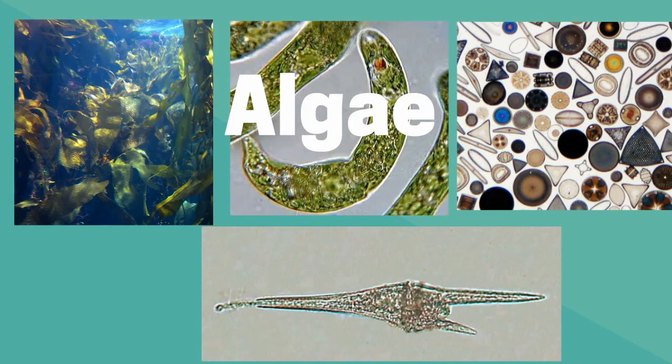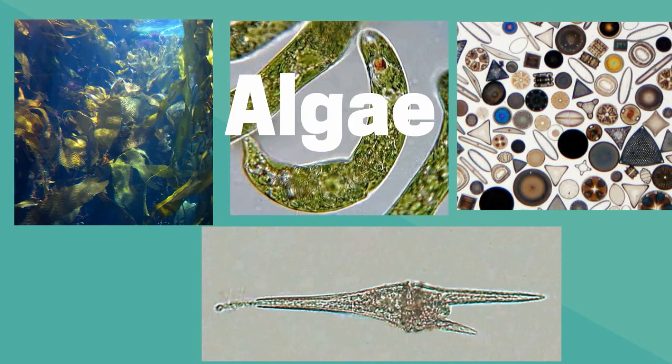Like many protists, this group of organisms has a large amount of diversity. There are unicellular algae and multicellular algae. A couple of examples of unicellular algae would be euglena.